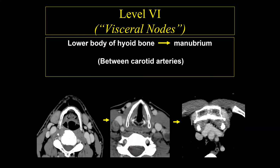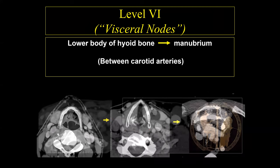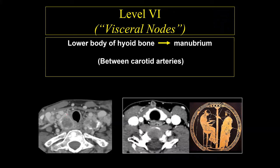The level 6 lymph nodes are located from the hyoid bone down to the manubrium, between the carotid arteries. Lymph nodes located laterally are level 3, but a lymph node between the carotid arteries is level 6. This is an example of bilateral metastatic level 6 lymph nodes located between the carotid arteries with calcifications — indicative of papillary thyroid carcinoma. Thyroid carcinoma has a propensity to involve level 6.